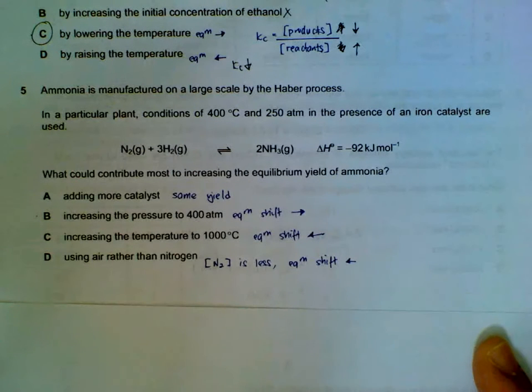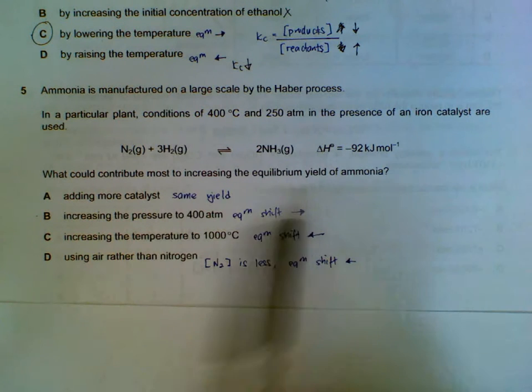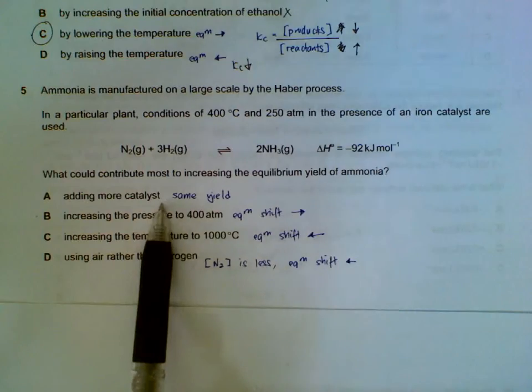Number 5. Manufacture of ammonia. What can we do to increase the equilibrium yield? Option A. If we add more catalysts, it will just give us the same yield. Equilibrium will just be achieved faster.